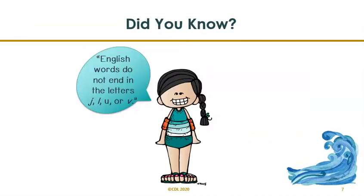So let's recap and make sure we know that if we see a letter V at the end of the word and it ends with a V sound, we know we're going to add the letter E. But did you also know that there are no English words that end in the letters J, L, U, or V?